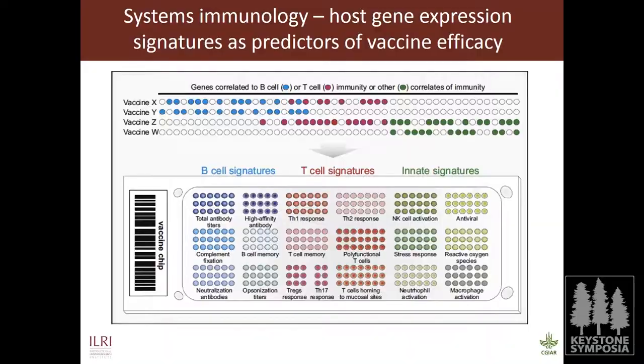All of these data streams get integrated into databases. You need clever people with computer algorithms to do data modeling, integrate all of it, and come up with biomarkers of protection or immunogenicity. The idea is: if you look at vaccines against different pathogens, what is common between them, what is different? Can you develop signatures in terms of B cells, T cells, or innate signatures that become markers of whether somebody is going to be immune or susceptible to disease?